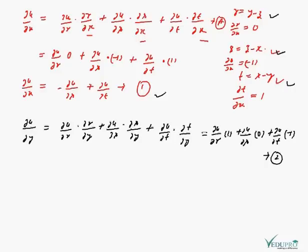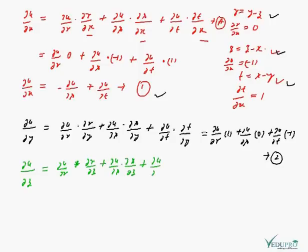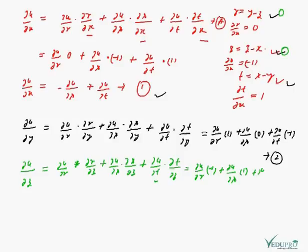Similarly, we calculate equation 3, that is ∂u/∂z: ∂u/∂r · ∂r/∂z + ∂u/∂s · ∂s/∂z + ∂u/∂t · ∂t/∂z. ∂u/∂r remains as it is and ∂r/∂z = −1. ∂u/∂s remains as it is and ∂s/∂z = 1. ∂u/∂t remains as it is and ∂t/∂z = 0. So ∂u/∂z = −∂u/∂r + ∂u/∂s. Call this equation 3.